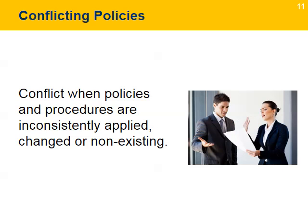Conflicting policies. The absence of clear policies, or policies that are constantly changing, can create an environment of uncertainty and unfairness amongst the team. For example, if one team member is rewarded for doing the same thing that another team member did but was not rewarded, this can cause conflict due to the perception of unfairness and unpredictability. The project leader can prevent this type of conflict by ensuring that the project policies and procedures are fair and consistent with all the rules, regulations, and policies of the organization.